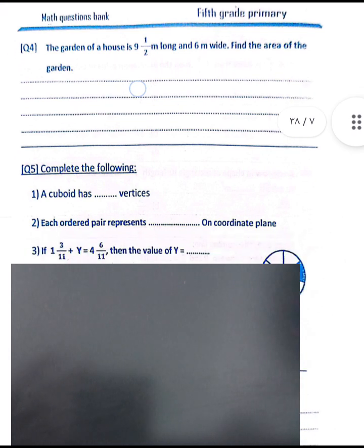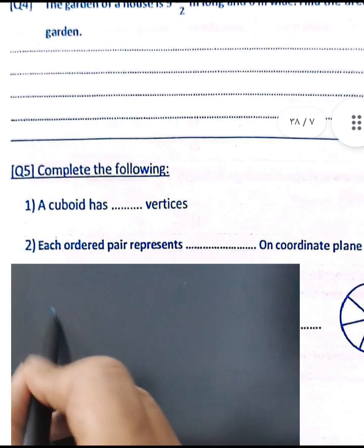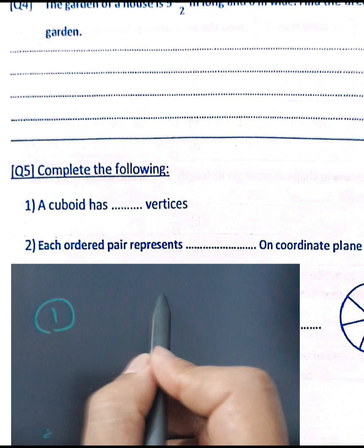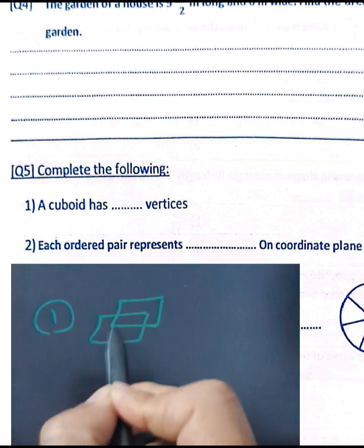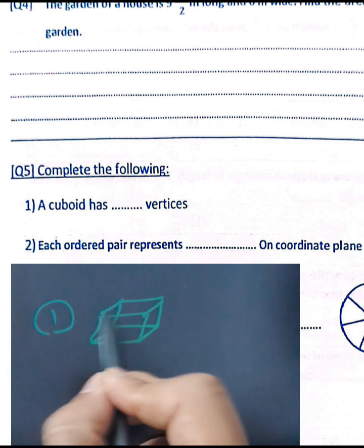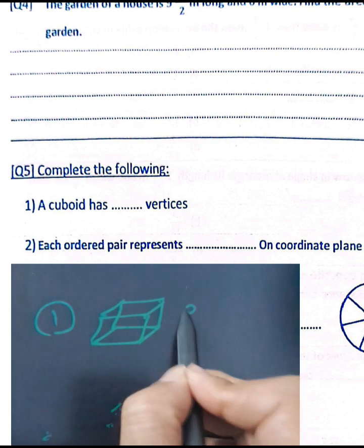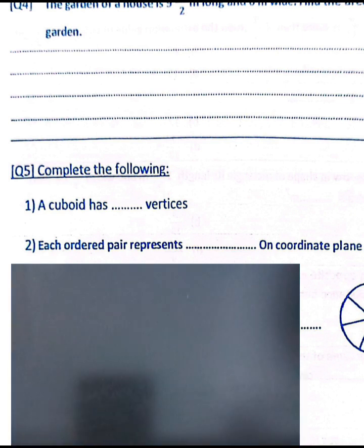Question number five: complete. A cuboid has eight vertices. Counting: one, two, three, four, five, six, seven, eight. A cuboid has eight vertices, six faces, and twelve edges.